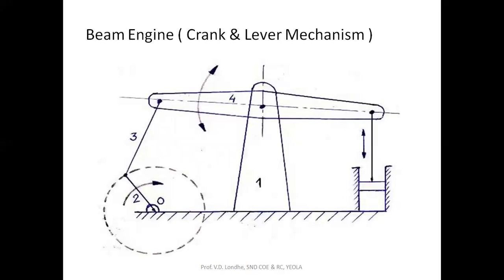The next inversion is the beam engine, also called the crank and lever mechanism. Here the first link is the fixed link, the second link is the crank with total rotary motion, and the third and fourth links have oscillating motion. The extension of the fourth link is the piston-cylinder assembly — the piston rod and piston. When the fourth link oscillates, it gives reciprocating motion to the piston rod. So the rotary motion of the crank is turned into oscillating motion of links three and four, which ultimately gives the piston and piston rod their reciprocating motion in the cylinder. This is called the crank and lever mechanism, as the crank has rotary motion and the lever has oscillating motion.